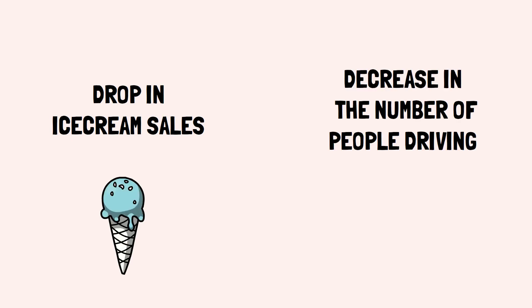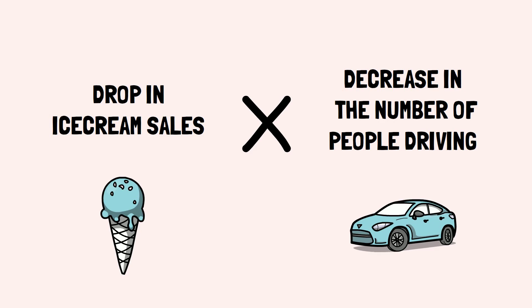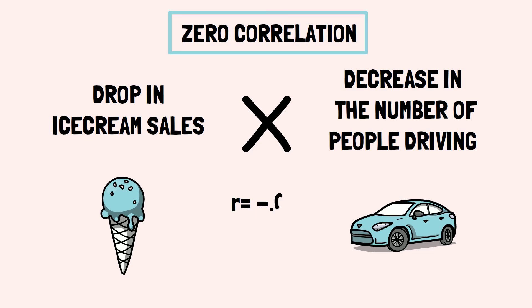It is also possible that sometimes no correlation may exist between the two variables. This is called zero correlation. Generally, it is difficult to find zero correlation, but the correlations found may be close to zero, for example, negative 0.02 or positive 0.03. This indicates that no significant relationship exists between the two variables or that the variables are unrelated to each other.